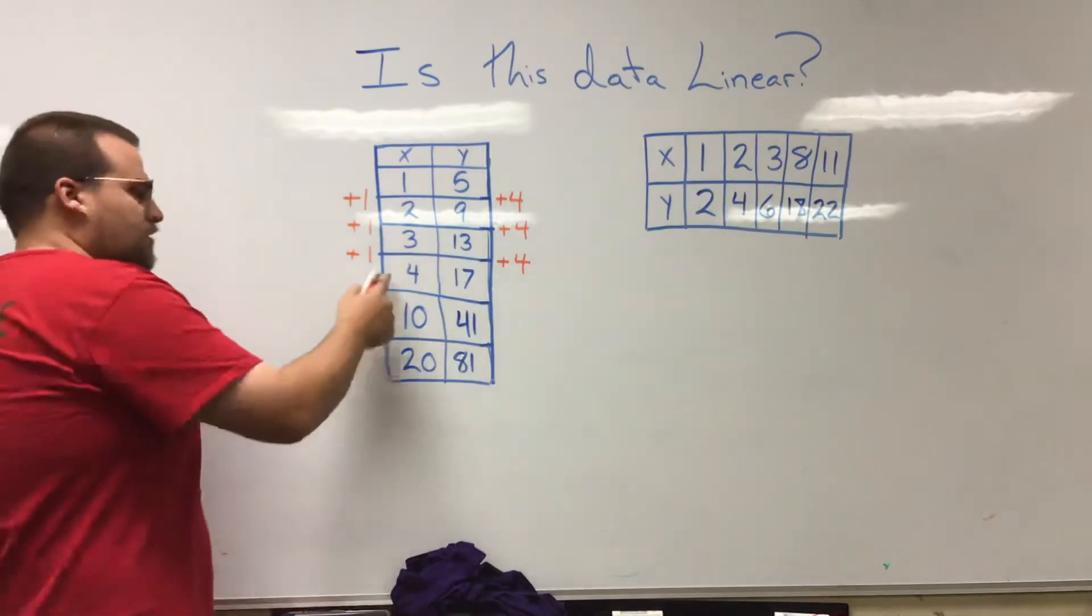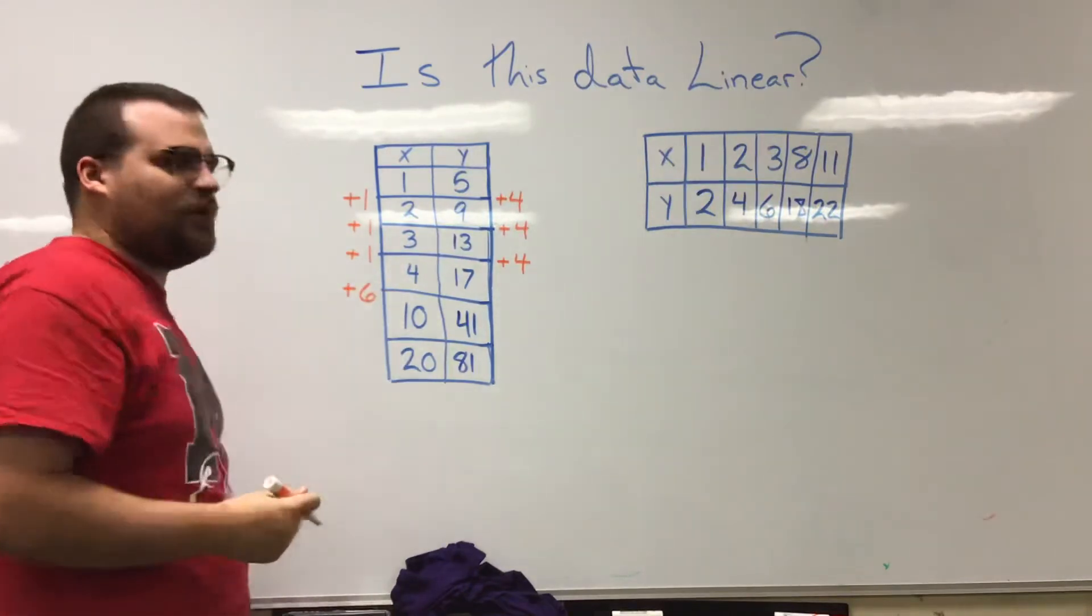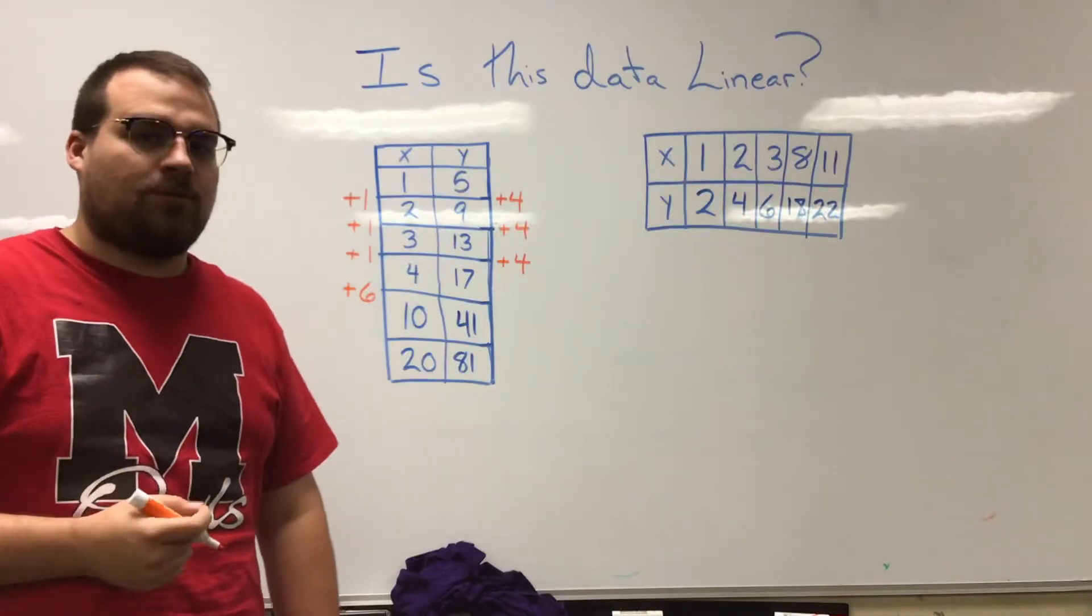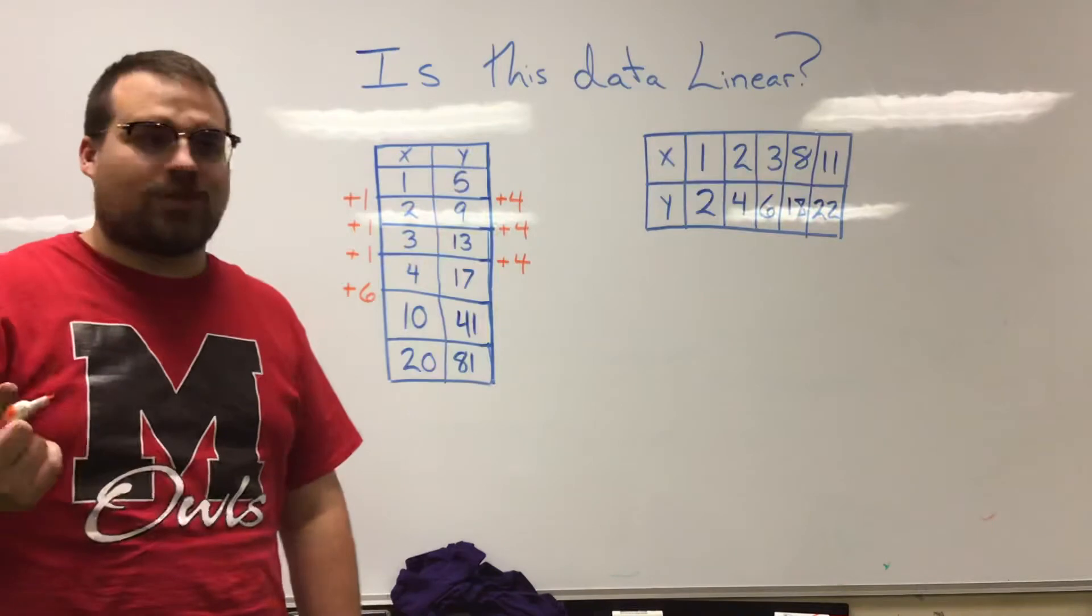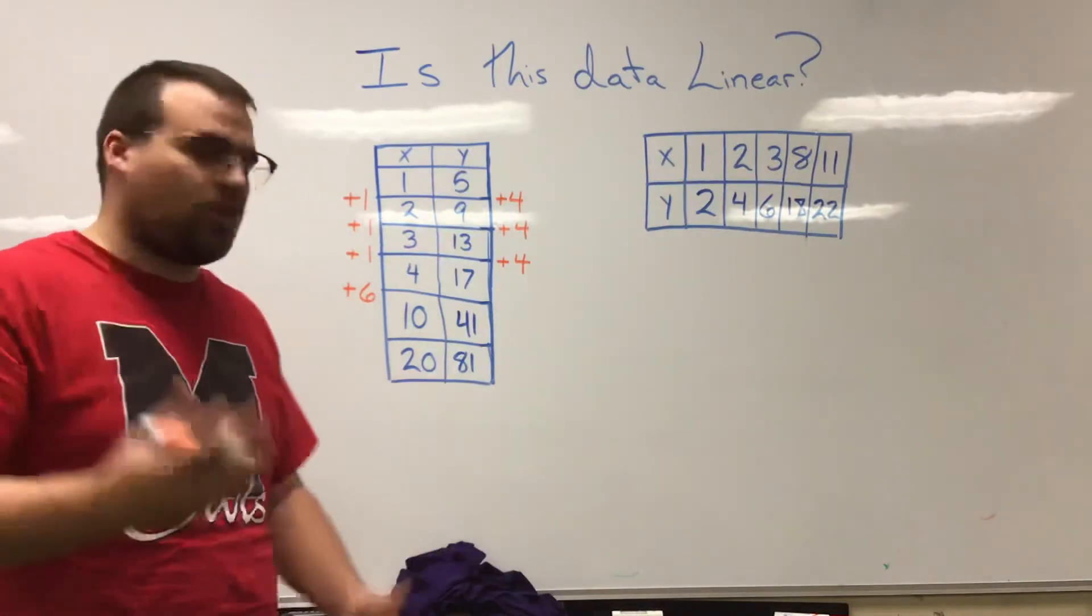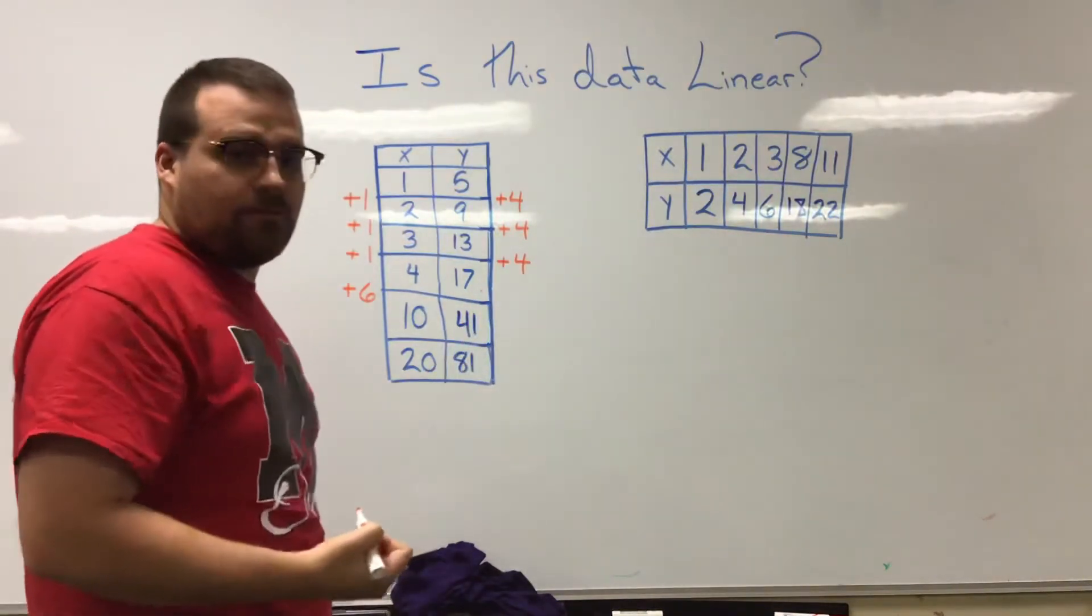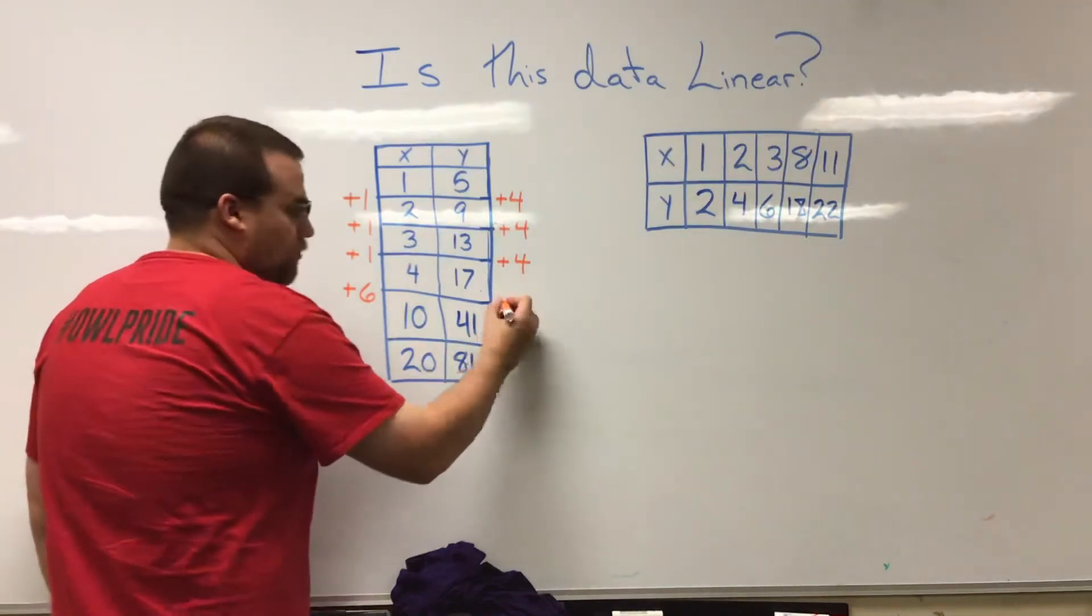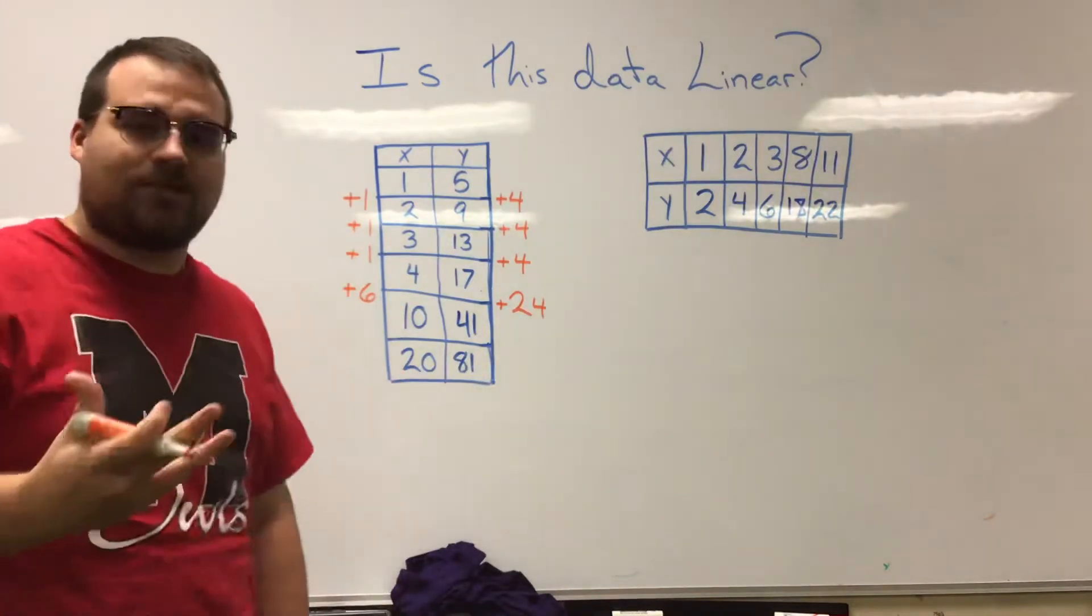So let's think about this. Between four and ten, X is going up by six. So how much should my Y be going up? Well, if it goes up four for one change, then for six changes it should be six times four or twenty-four, right? It should be going up by twenty-four here. What's the difference between seventeen and forty-one? Well, maybe you can mentally do that, maybe you toss it in a calculator, but guess what? It's twenty-four. So that fit yet again.